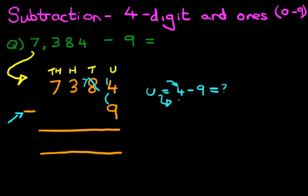but it's 14 minus 9. That's where the 1 has come in. 14 minus 9. Now you know how to do this. 14 minus 9 is? That's right, it is 5. So let's write that down.